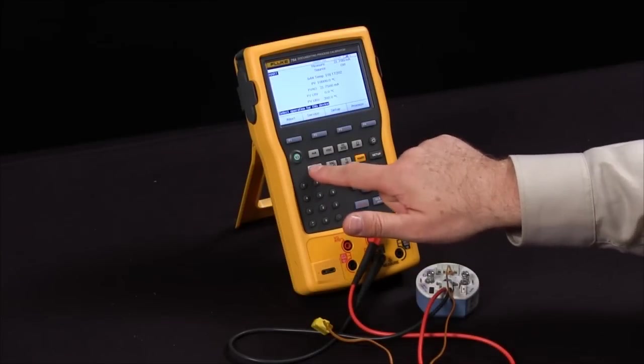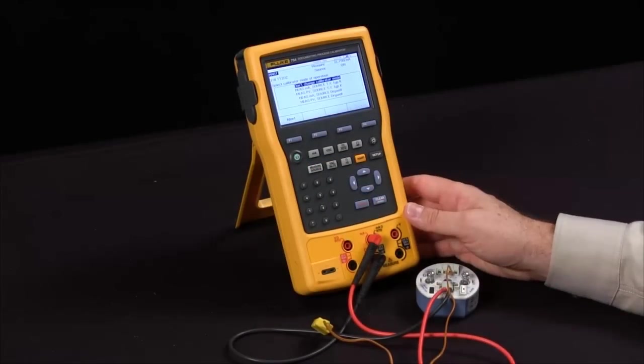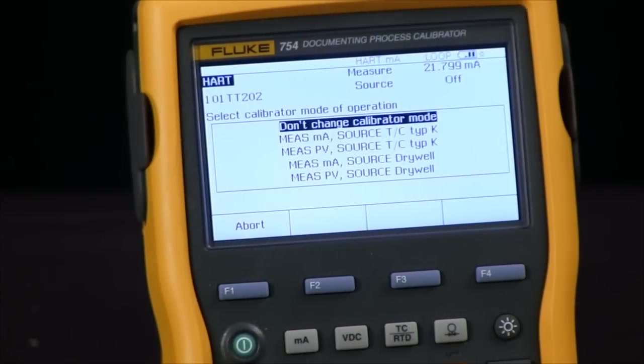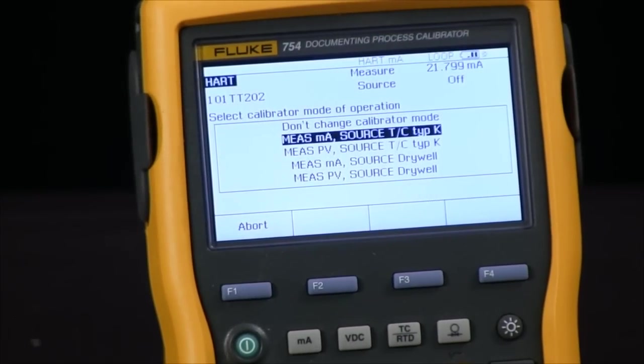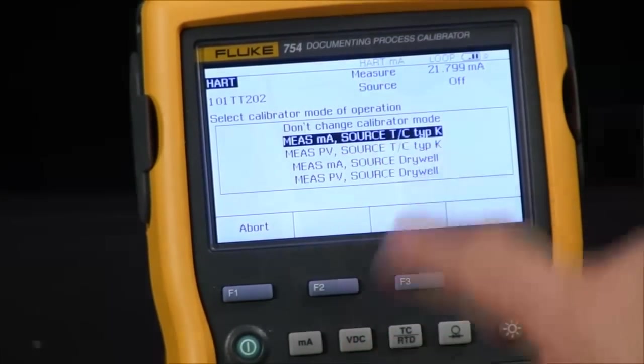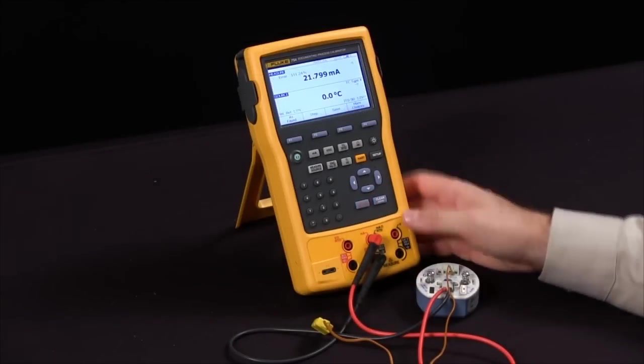I will simply hit the measure and source key, letting the calibrator know what I wanted to do. So I will shift down to measure milliamp and I'm going to source to a thermocouple type K. We're going to enter that.